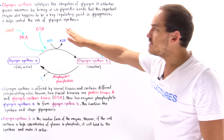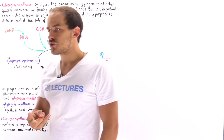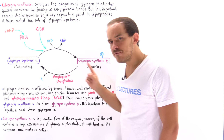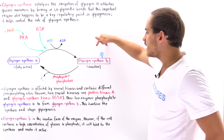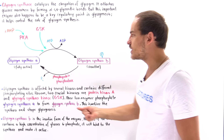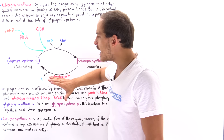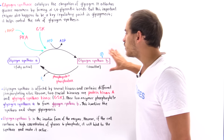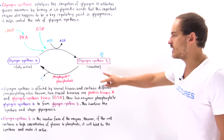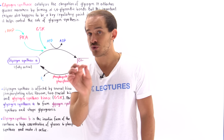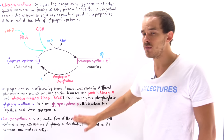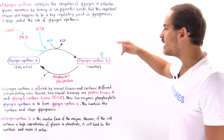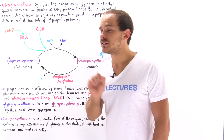Glycogen synthase exists in two different forms: glycogen synthase A and glycogen synthase B. The only difference between these two is that glycogen synthase B is simply the phosphorylated version of glycogen synthase A. Glycogen synthase A always exists in the fully active form, whereas glycogen synthase B is predominantly inactive — but certain molecules can act as allosteric activators of glycogen synthase B, binding to it and making it active.